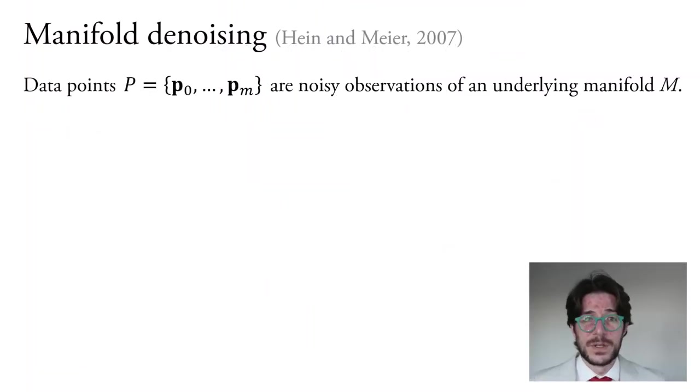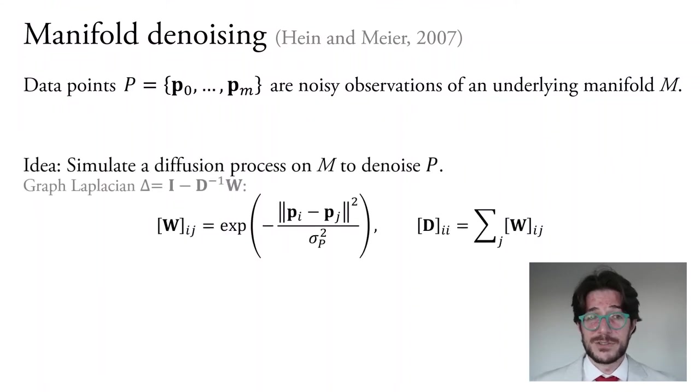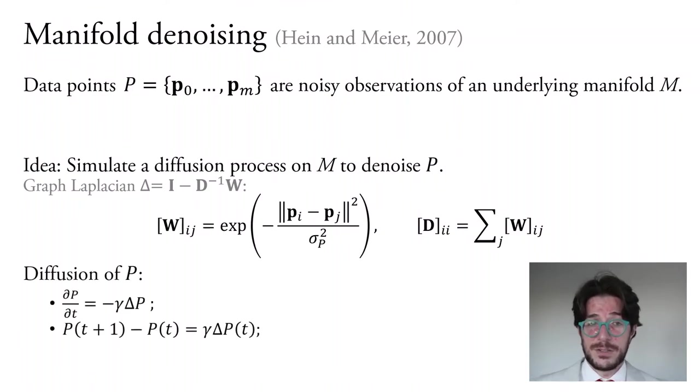Einemeyer's algorithm supposes that we have data points P as noisy observations of an underlying manifold M. Their idea is to simulate a diffusion process on M to denoise P. We construct the generator of the diffusion process as the graph Laplacian based on pairwise distances W of individual data points P. Then, denoising is given as an iterative time discretization obtained based on an implicit Euler scheme.